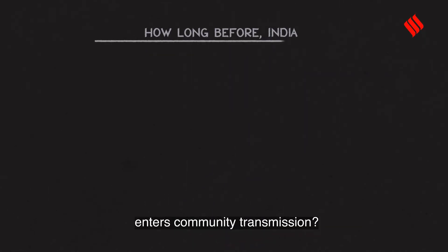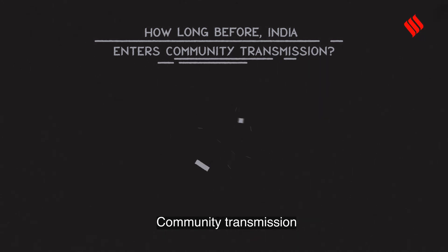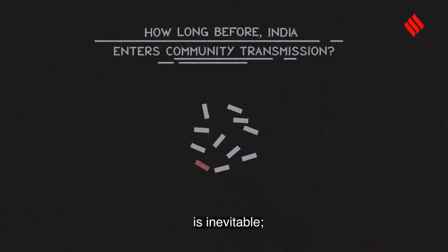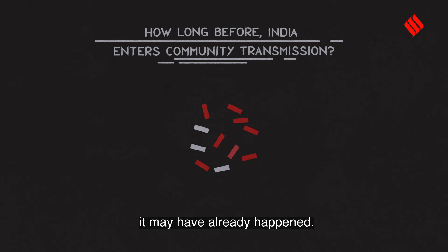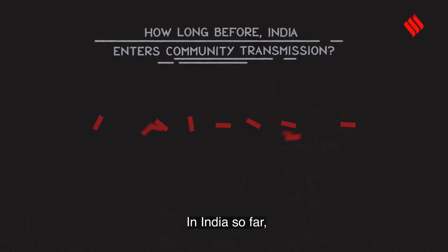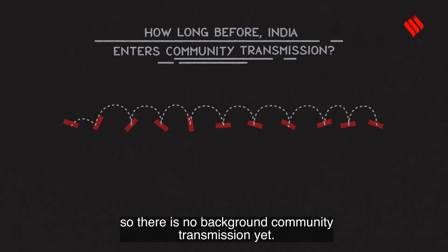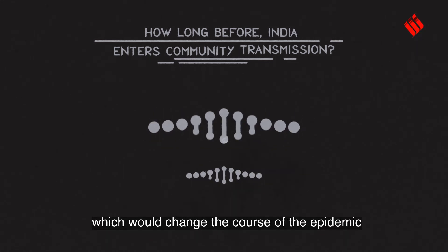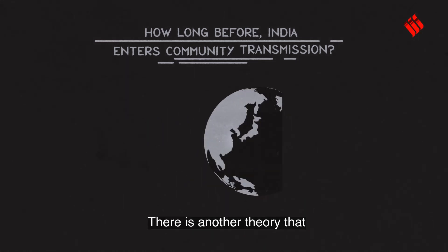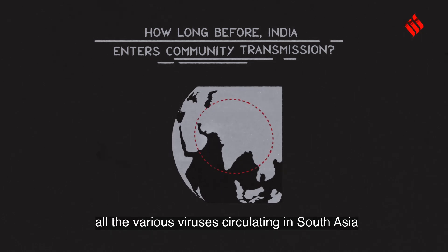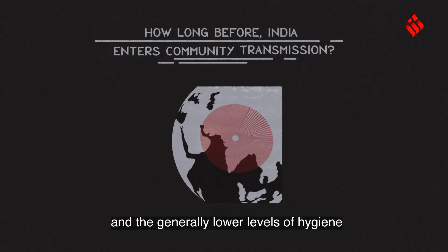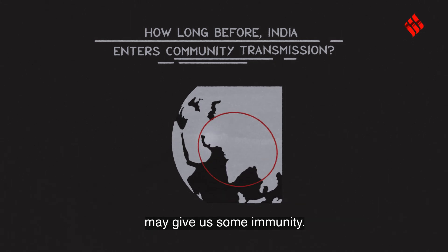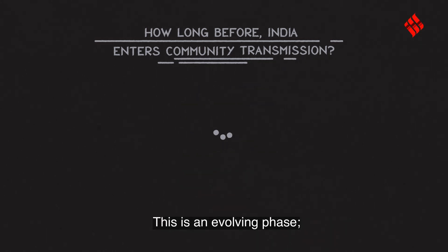How long before India enters community transmission? Community transmission is inevitable, but some experts feel it may have already happened. In India, so far an explanation has been found for every case, so there is no background community transmission yet. There are some reports of one strain having less mortality, which would change the course of the epidemic in India. There is another theory that the various viruses circulating in South Asia and the generally low levels of hygiene may give some immunity. This is an evolving phase — we have not done badly so far, but there is more to come.